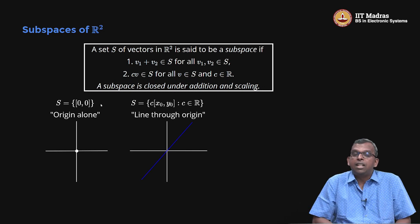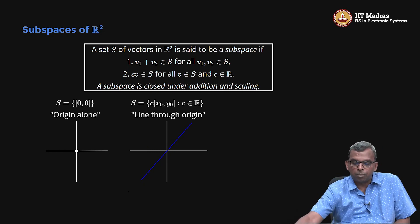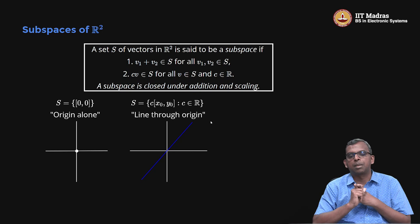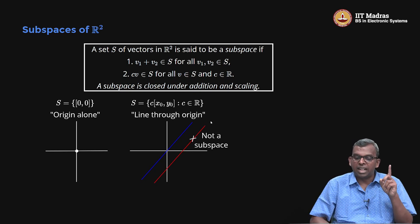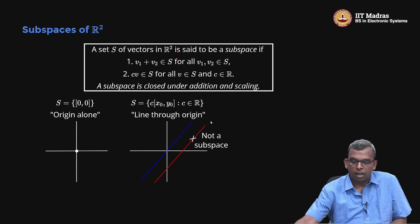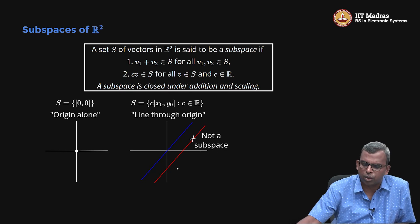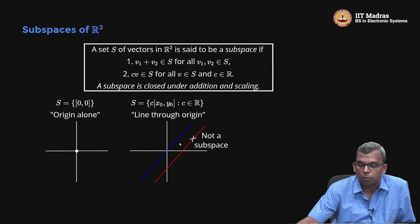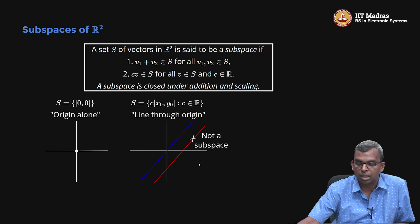Another very interesting subspace is a line through the origin. If you have a line through the origin, if you take any two points and add them, you get another point on the same line. If you take any point and scale it, you get a point on the same line. So the line through the origin is a subspace. A lot of people will wrongly say any line is a subspace — that is not true. A line that does not pass through the origin is not a subspace. If you take a point on such a line and multiply it by a constant, it will not stay on that line; it will go off somewhere else. Only lines through the origin are subspaces.